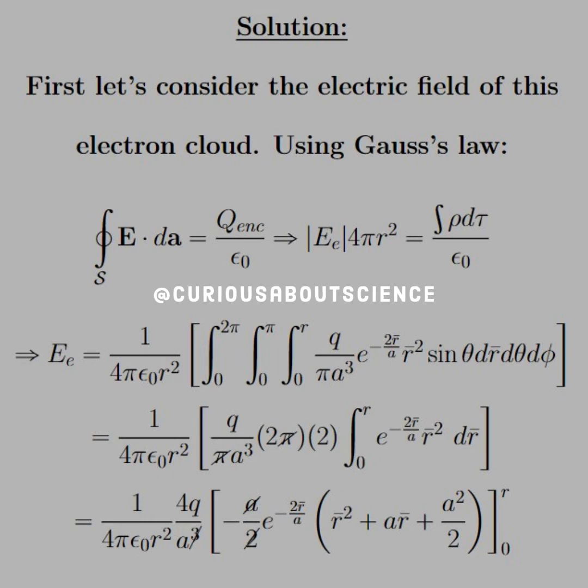We set up the triple integral with the given charge distribution. Let's make our lives easier by bringing q over pi a cubed outside, and understanding that the angular integrals with phi and theta end up with 2 pi and 2 respectively, and cancel through. That leaves just the radial integral.